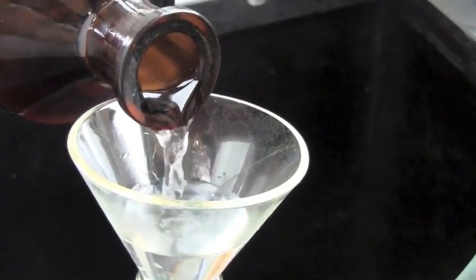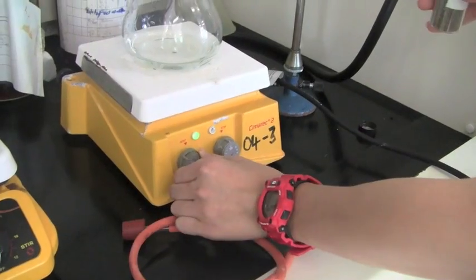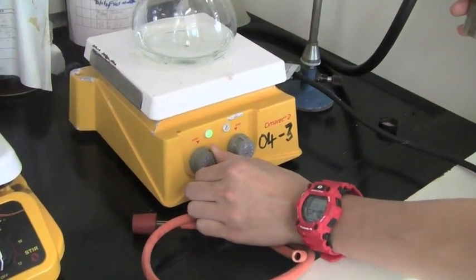Then, the Erlenmeyer flask was filled with nitric acid and then placed on the hot plate. The heat from the hot plate is to intensify the gas pressure within the flask. The increased collisions would push the NO2 gas out.